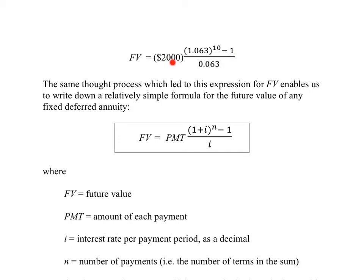In other words, in the place of $2,000, we would get whatever amount the payment was. PMT here is the amount of each payment. Instead of 6.3% interest, we could have some other interest rate, but we'd have to be sure to express it in decimal form inside the formula. And that will occur in two separate places. Note how the interest rate occurred two separate places in this expression. It occurs in two separate places in general. Finally, if we didn't have 10 payments, but some other number, we know where exactly that other number goes in our computation. It is the exponent of 1 plus i.